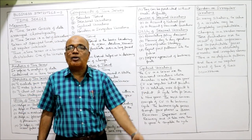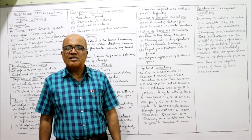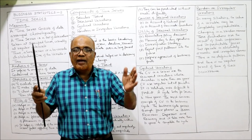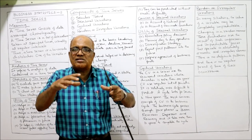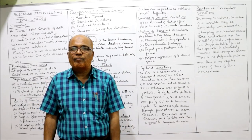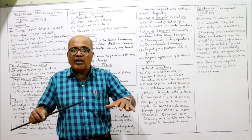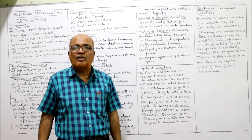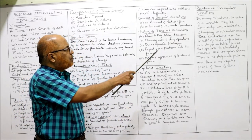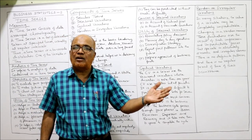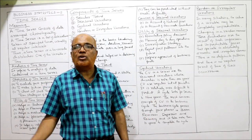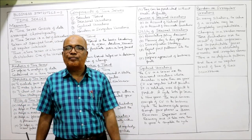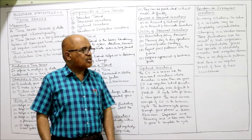Third utility is diversification strategy. When there is no demand, the company will not be wound up — we have to make diversified activities. A company which is making soft drinks: demand is more during summer, but when summer is over the company has to make diversified strategies. During non-summer season the company must make some other products so the company can survive. Fourth utility: project past patterns into the future — by studying past patterns of seasonal variations we can make planning for the future.